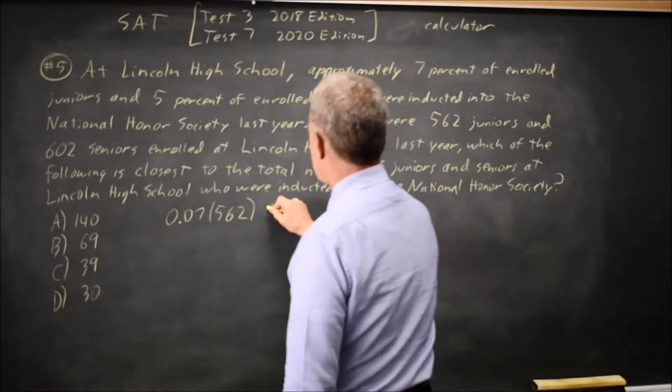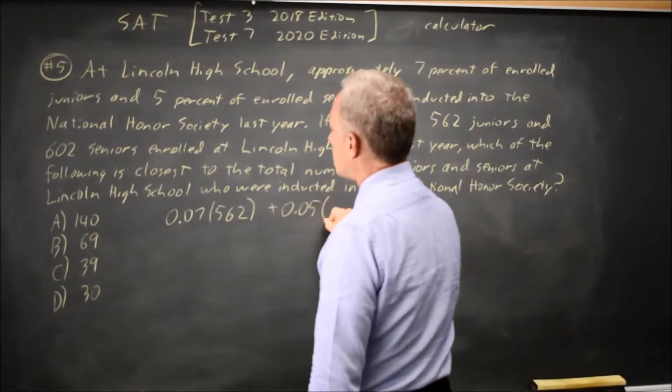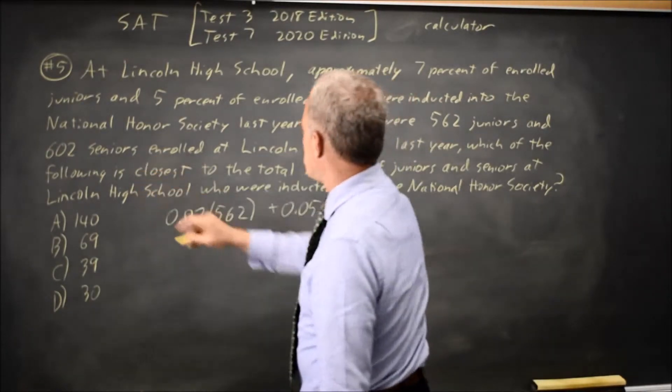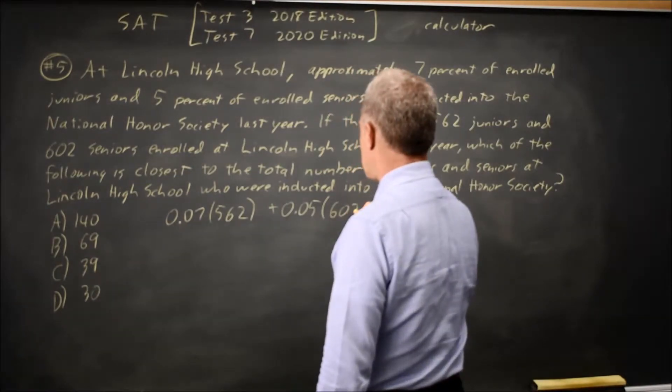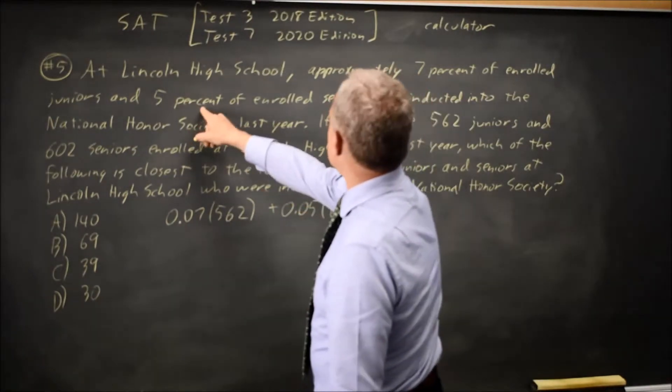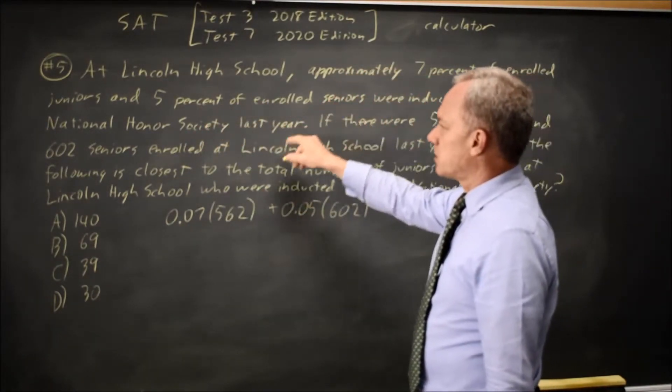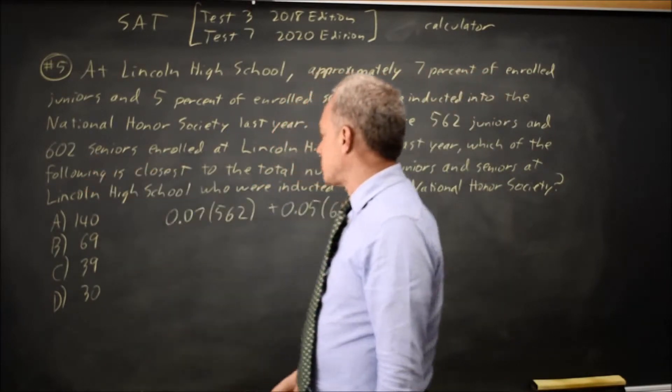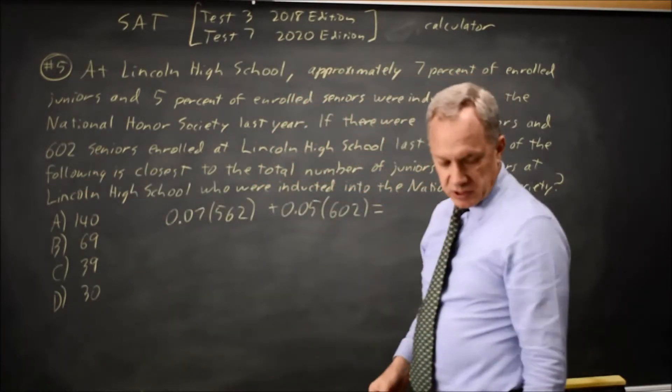plus 5% of 602, where 5% is the percent of enrolled seniors and 602 is the number of enrolled seniors. This will give us the total number.